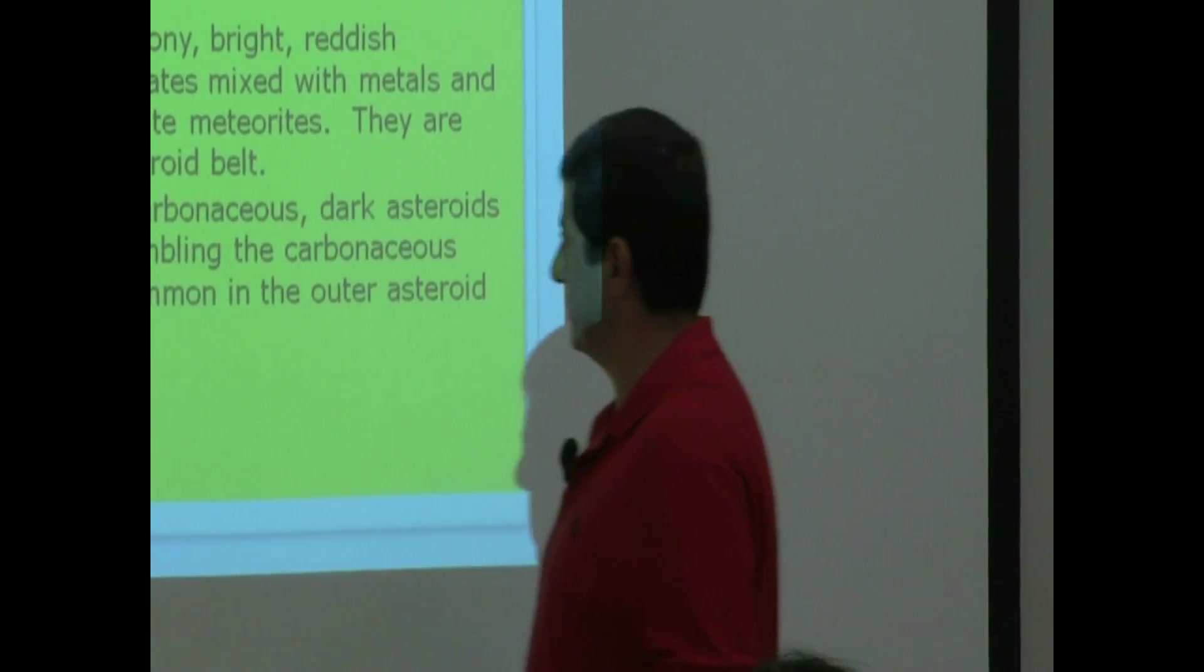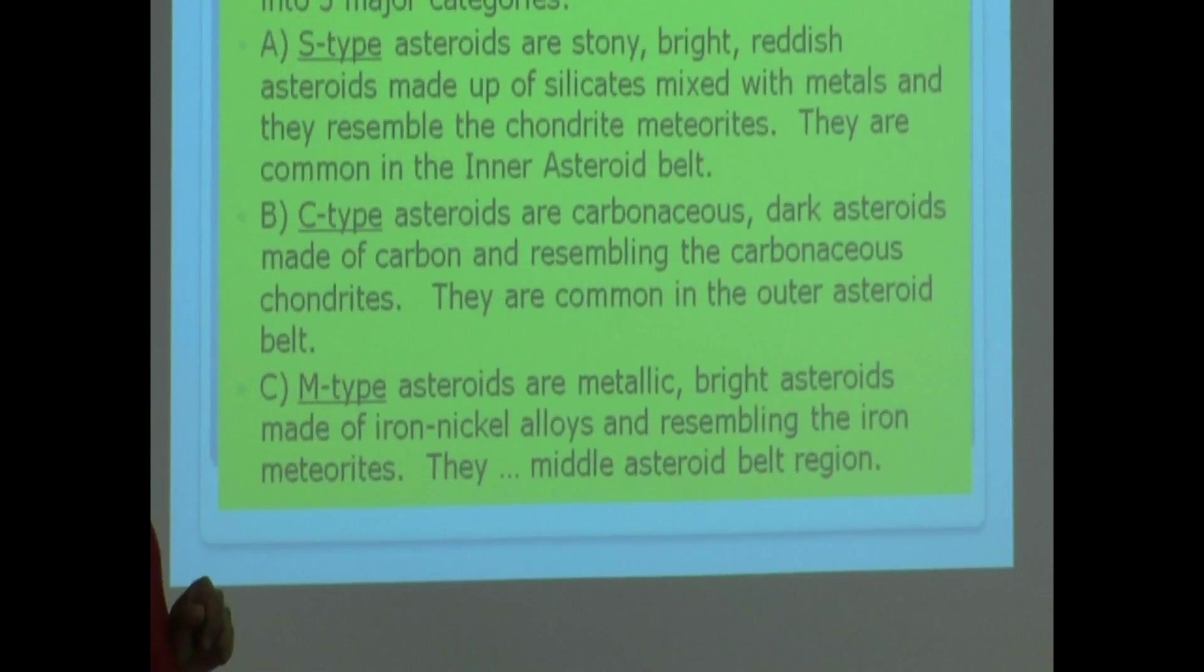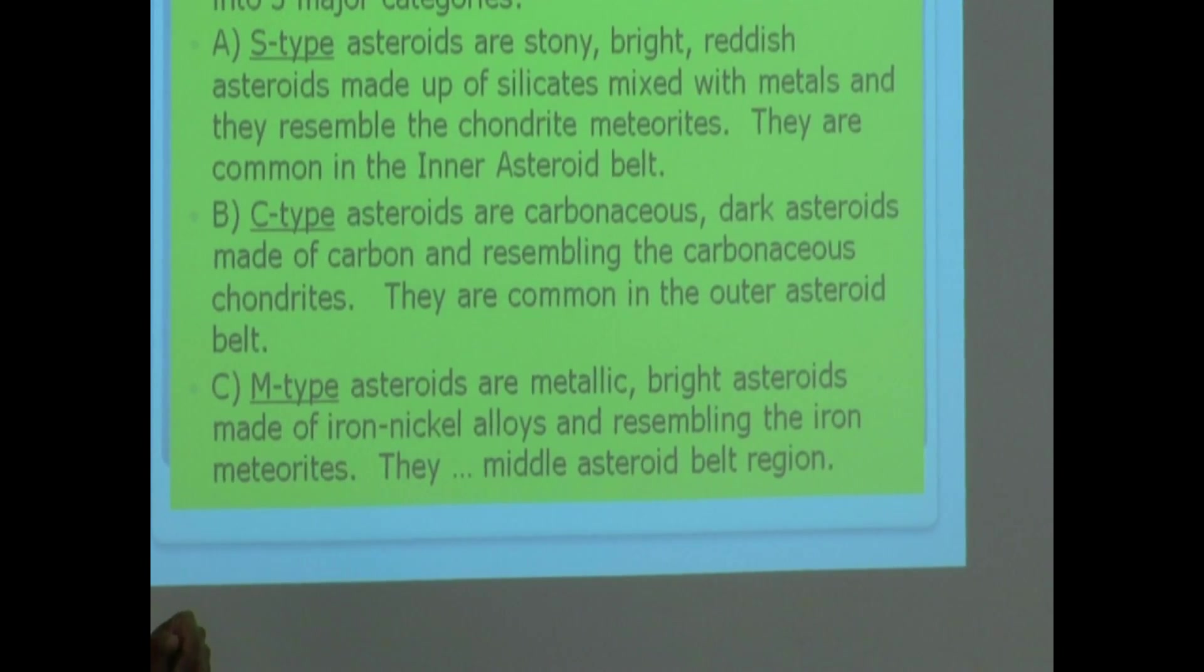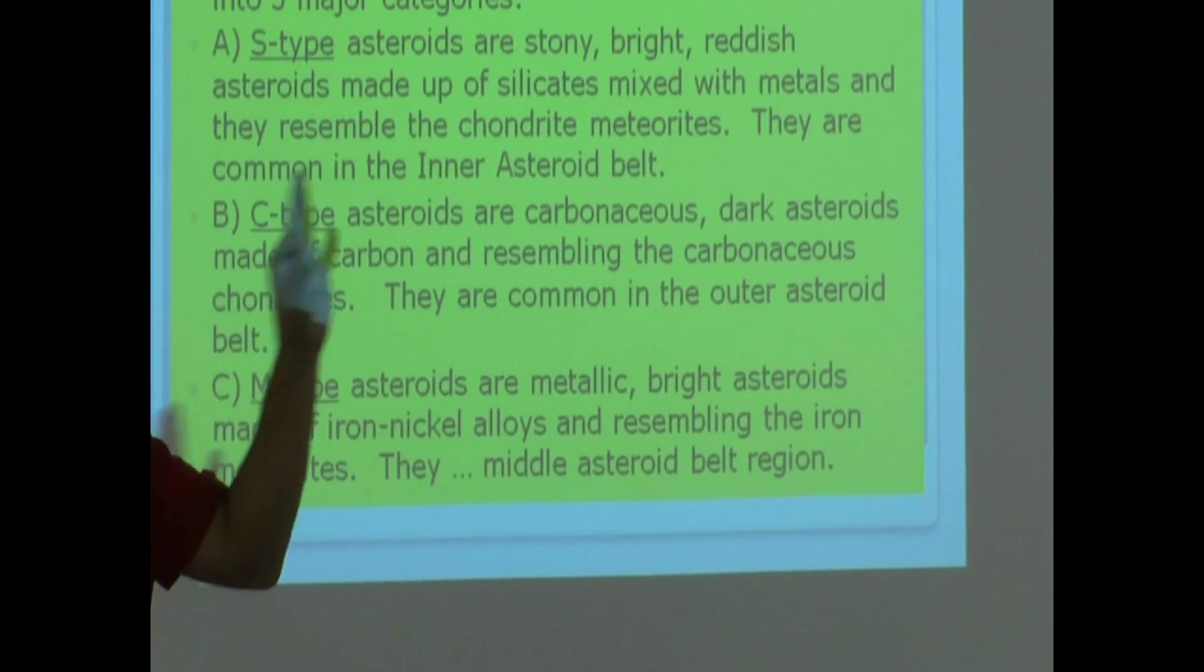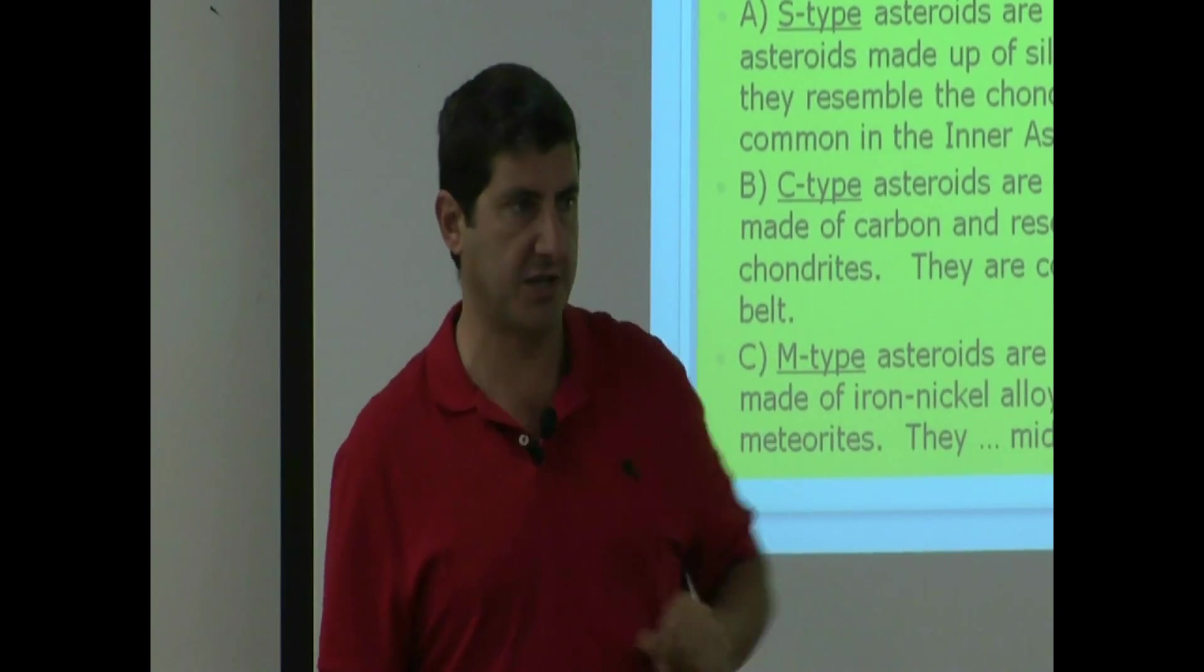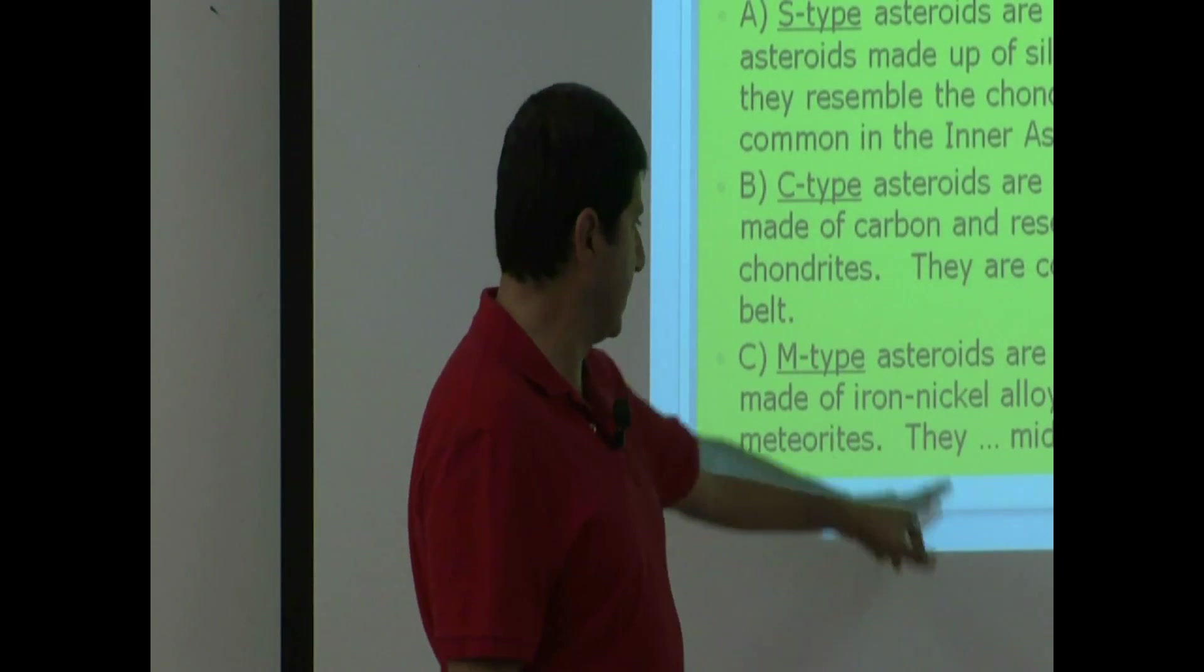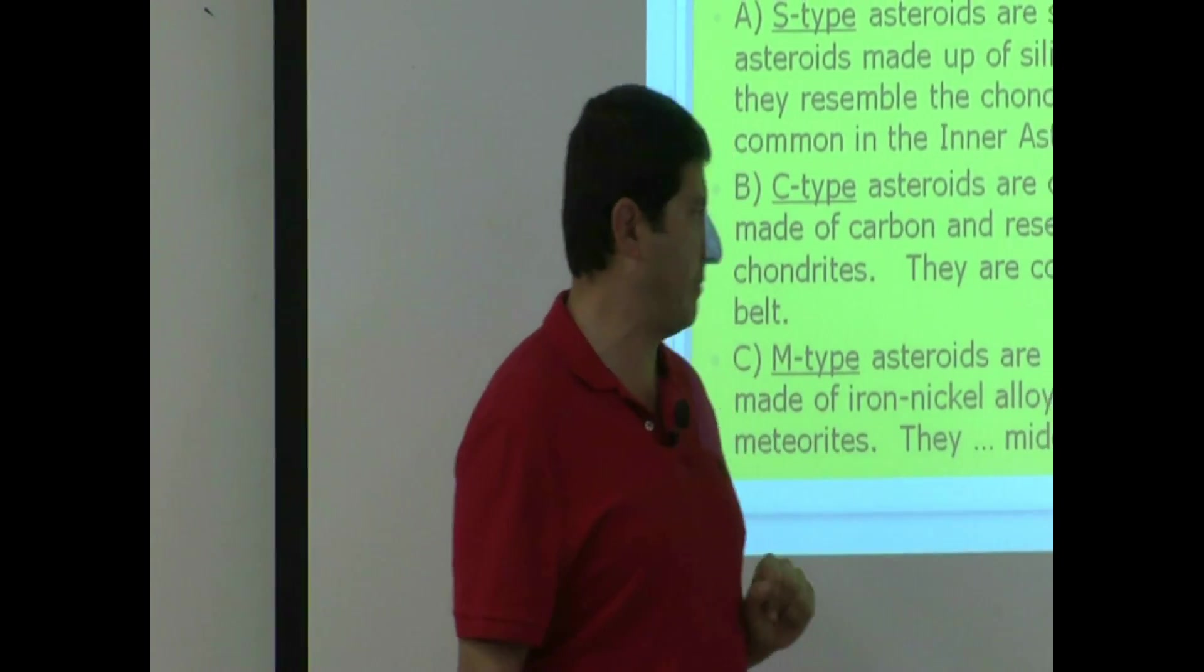And then you've got M-type asteroids, are metallic bright asteroids made up of iron nickel alloys and resembling the iron meteorites. So, the ones that I showed you the picture of, the iron meteorites with this crystallized pattern. So, those are metallic asteroids. They are common in the middle asteroid belt.